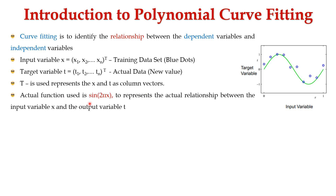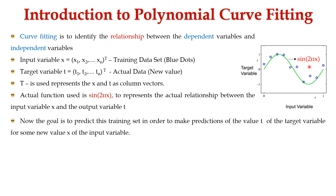The actual function used is sin(2πx). We can see the curve represented in green color here — it is the function sin(2πx). It is mainly used to represent the actual relationship between the input variable x and the output variable t. The goal is to predict the training set in order to make predictions of the value t of the target variable for some new value x of the input variable.